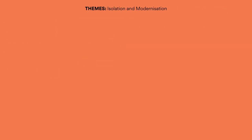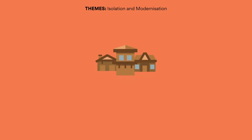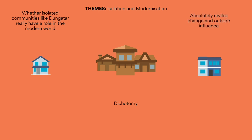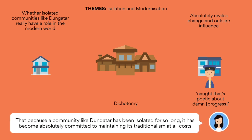Let's talk about themes. Isolation and modernization: one of the central conflicts in The Dressmaker is between the isolated town of Dungatar and the rapidly modernizing surroundings of post-Depression 1950s Australia. Ham uses this dichotomy — meaning when two opposing factors are placed right next to each other — to question whether isolated communities like Dungatar really have a role in the modern world. Our clearest indication that Dungatar not only is traditionalistic but absolutely reviles change is right at the start of the novel, when a train conductor laments that there is 'naught that's poetic about damn progress.' Here we see the overriding contention of Ham's novel: because a community like Dungatar has been isolated for so long, it has become absolutely committed to maintaining its traditionalism at all costs.